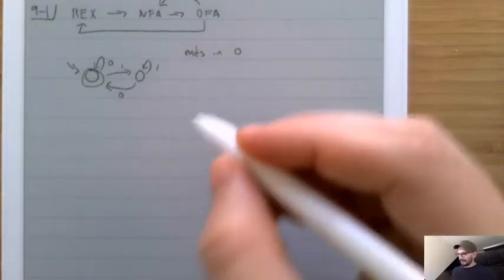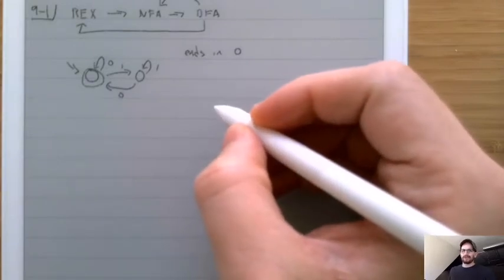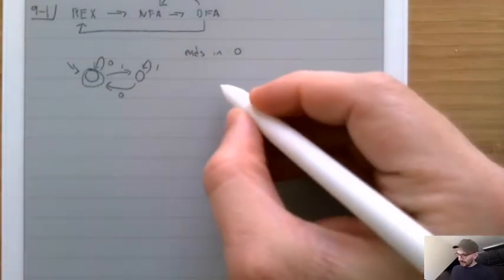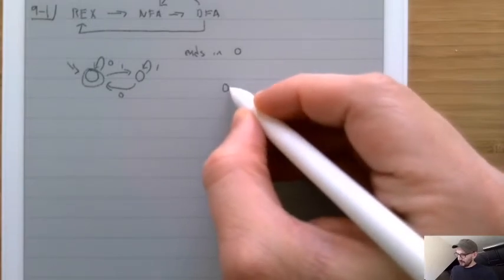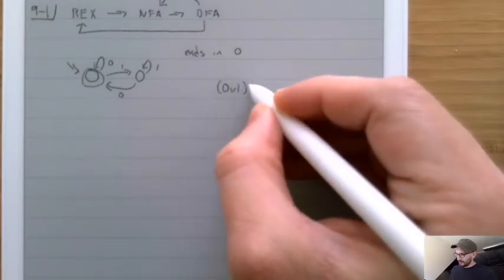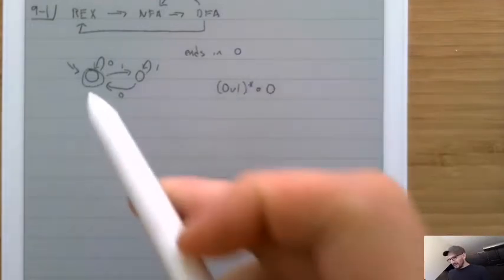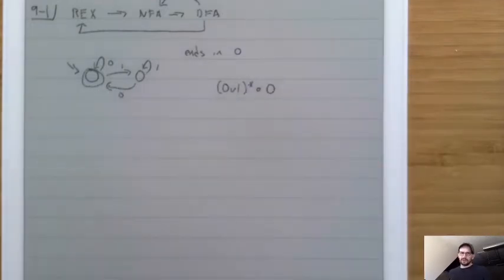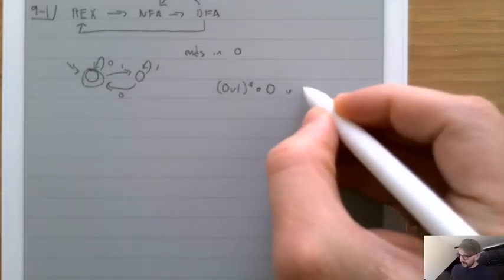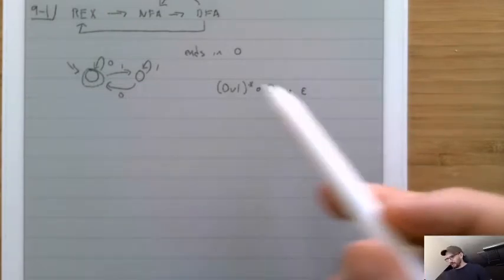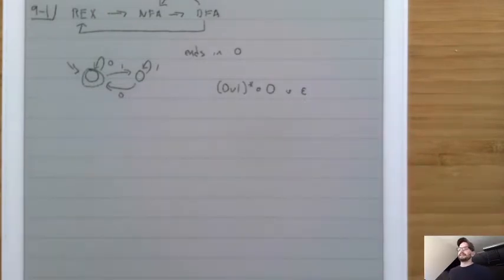What you would do is write down: how do we write 'ends in 0'? Well, ends in 0 basically means it doesn't matter what it is beforehand, it just has to have a 0 at the end. So you might write down something like (0 union 1)* ∘ 0, although this machine also includes epsilon, so we would have to union that with epsilon. This regular expression might be a way to write down that same thing.